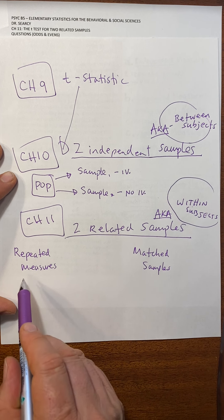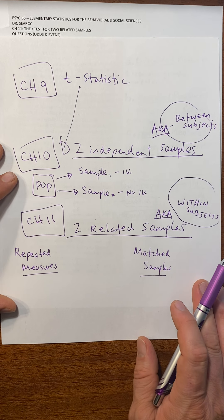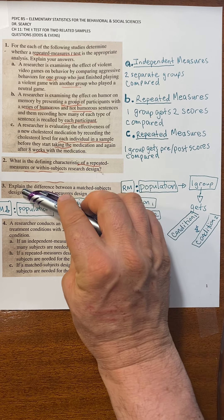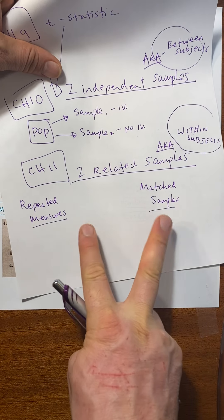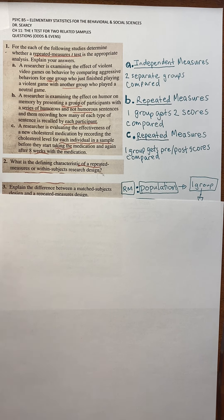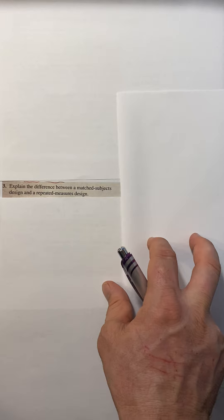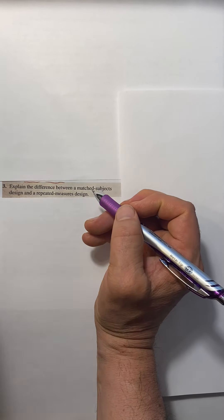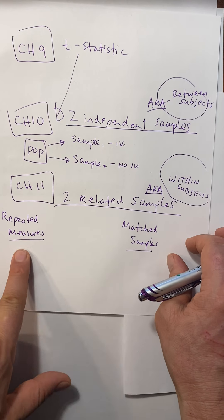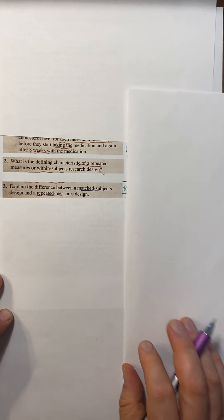So I want to describe what this design looks like compared to the other design. Question 3 in this week's homework actually asks about these two different designs. It says: explain the difference between a matched subjects design and a repeated measures design. Both of these are the within subjects type of design — the two related samples. One is repeated measures, the other one is matched samples.